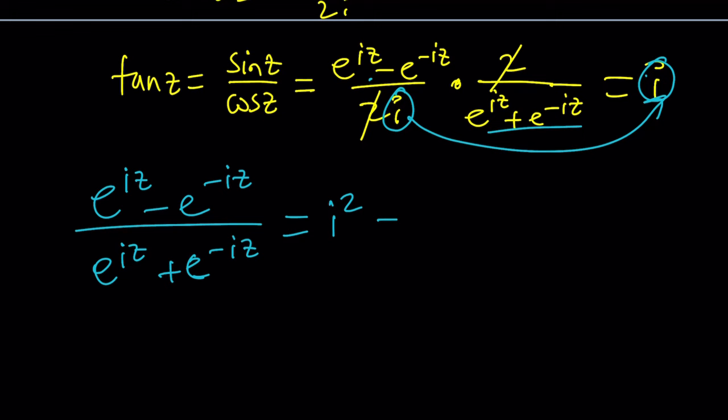Now notice why, have you noticed why I multiply these only? To get a constant number. Now we're going to set it equal to negative one directly and then cross multiply. That gives us e to the iz minus e to the negative iz equals negative e to the iz minus e to the negative iz. So far so good, right?